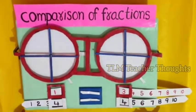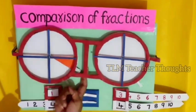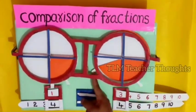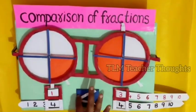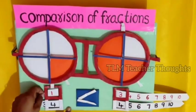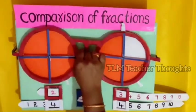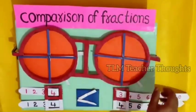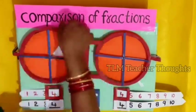1 by 4, 3 by 4. 1 by 4 is less than 3 by 4. 4 by 4, 4 by 4 — both are equal.